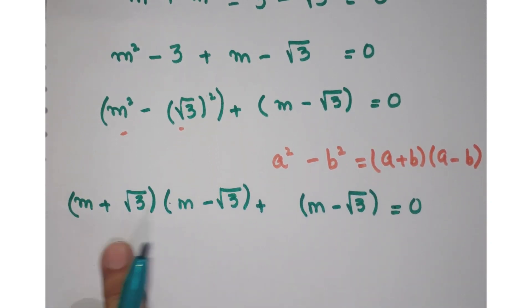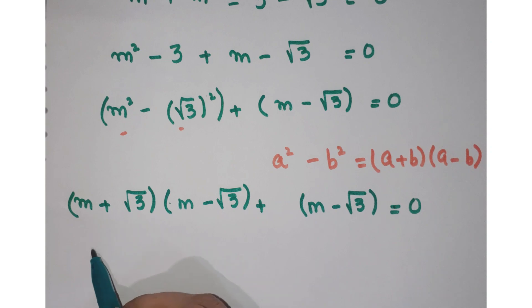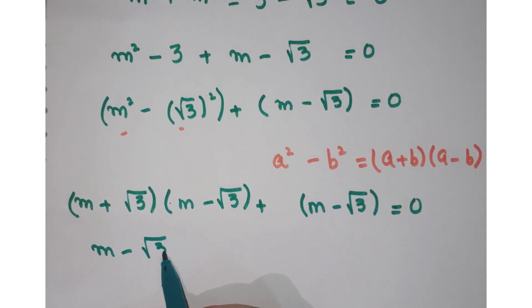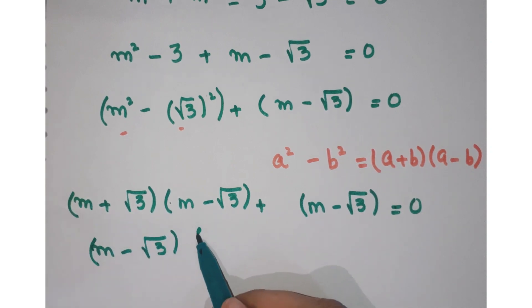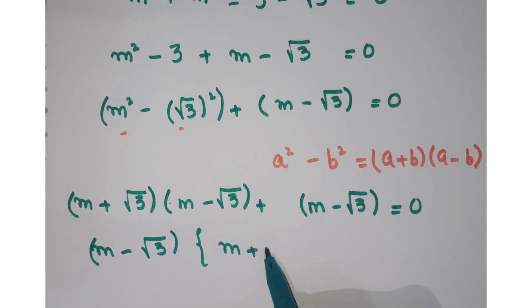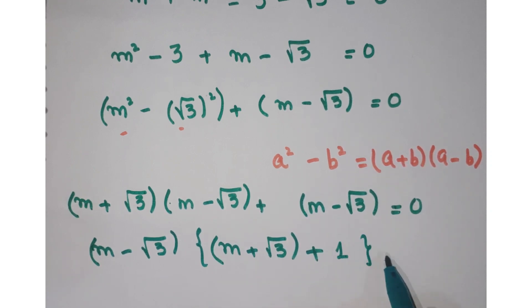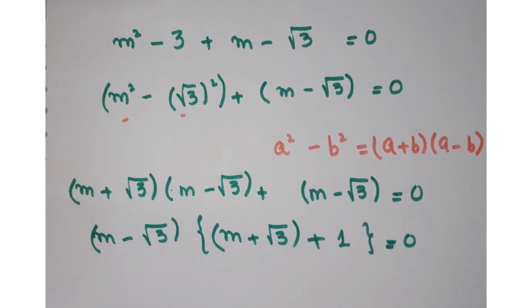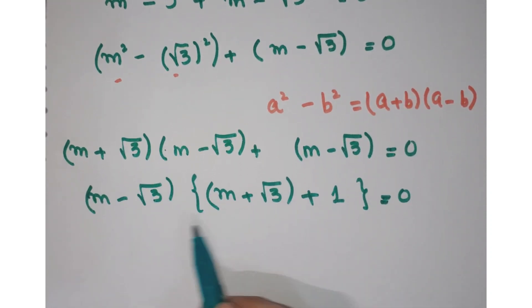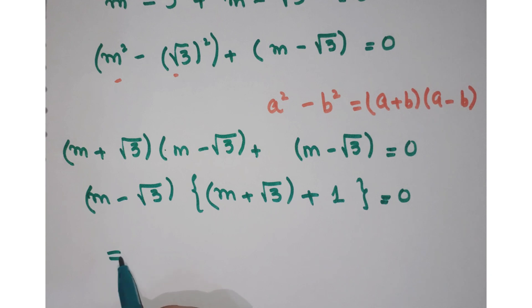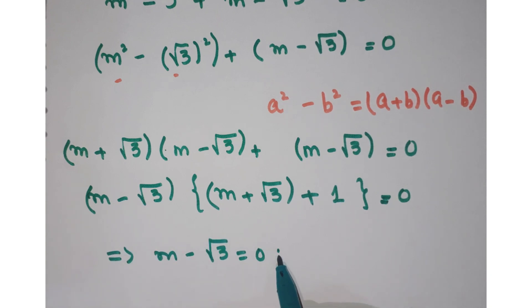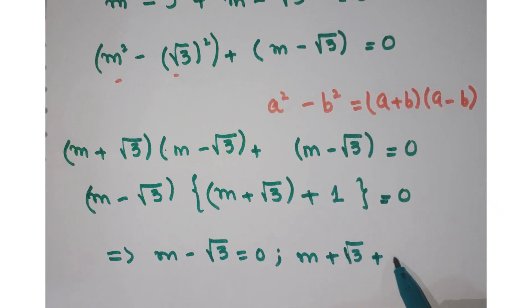Now in these two terms, take out m minus under root 3 as common. So what is left? m plus under root 3 plus 1 equals 0. Further, this implies these two terms are equal to 0: m minus under root 3 equals 0, and m plus under root 3 plus 1 equals 0.